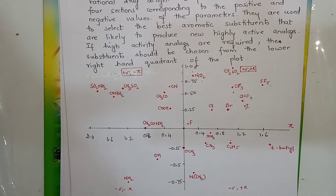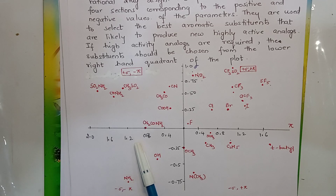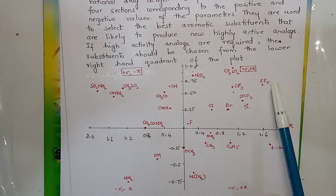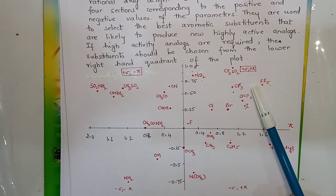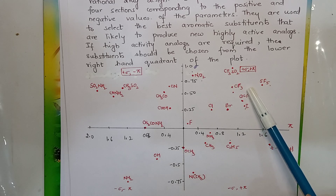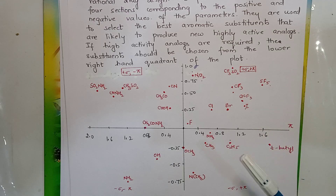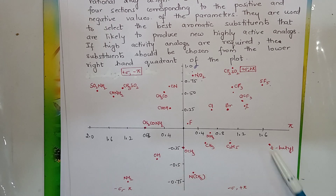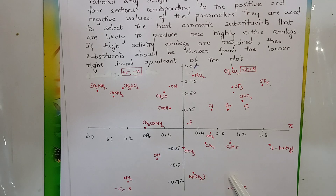We have all the needed variation. For example, if the log pi value is positive and the delta value is positive in this side of the plot, it may decrease biological activity. Now, if the log pi value is positive but the log delta value is negative, it may increase the biological activity.